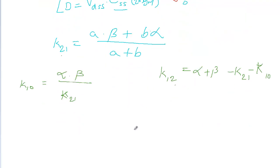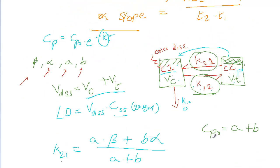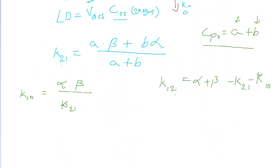The next step is to find CP naught. CP naught equals the A intercept plus the B intercept. The units for A and B are microgram per ml, so the units for CP naught are also microgram per ml. Then Vc equals dose divided by CP naught.